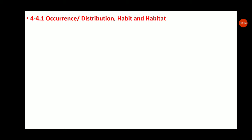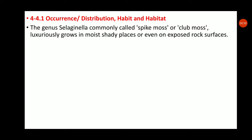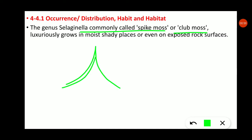First, we will see the occurrence, distribution, habit, and habitat of Selaginella, as these are the basic characters of any species. The genus Selaginella is commonly called the spike moss or club moss.